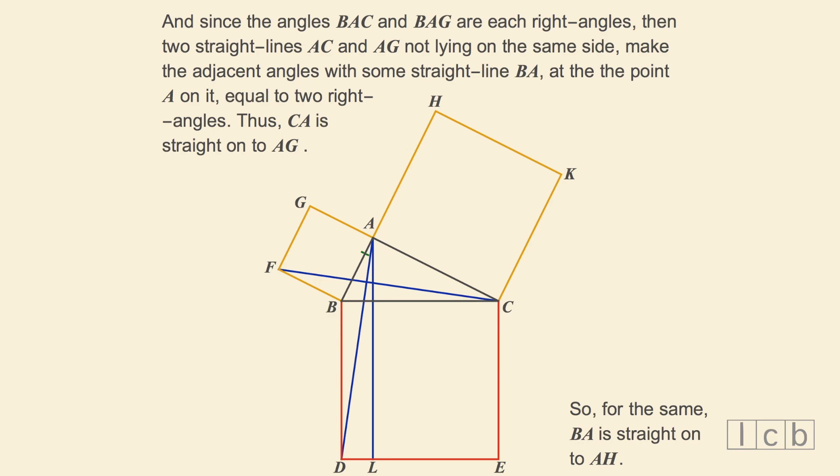And since the angles BAC and BAG are each right angles, then two straight lines AC and AG, not lying on the same side, make the adjacent angles with some straight line BA at the point A on it, equal to two right angles.